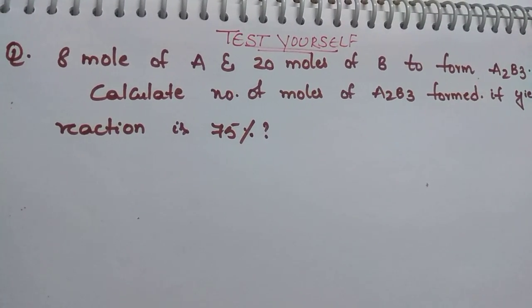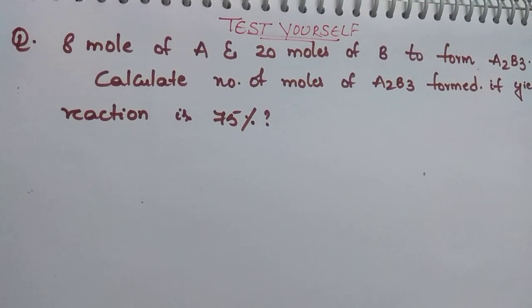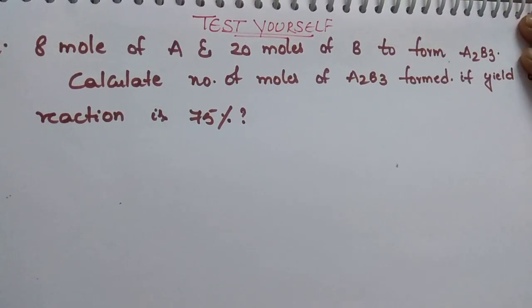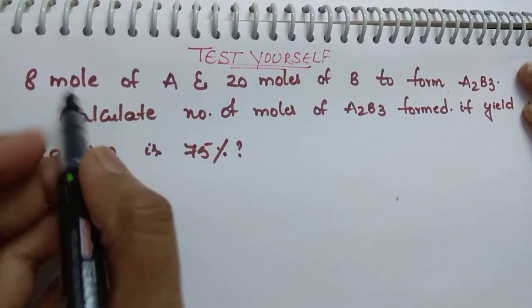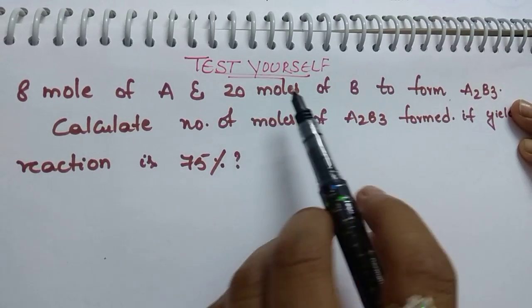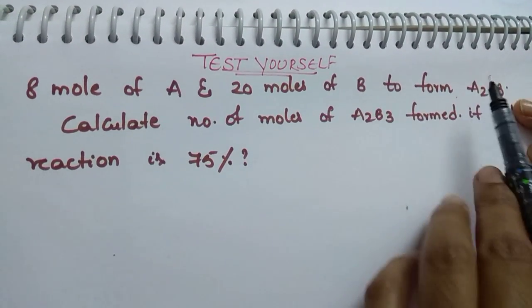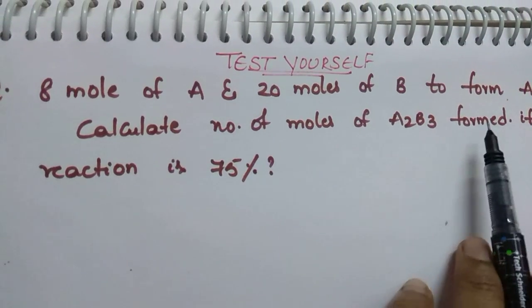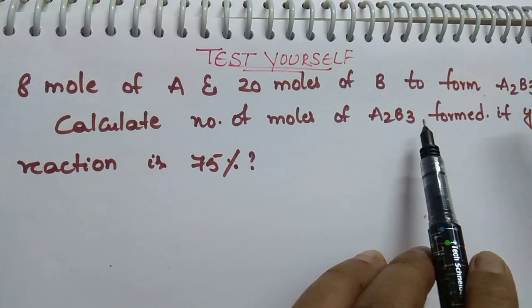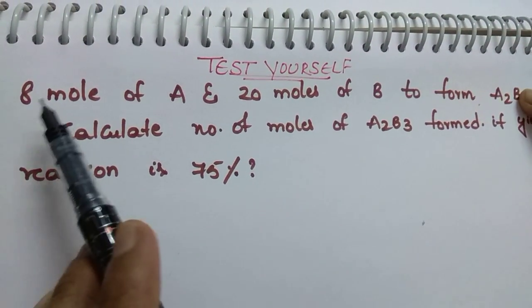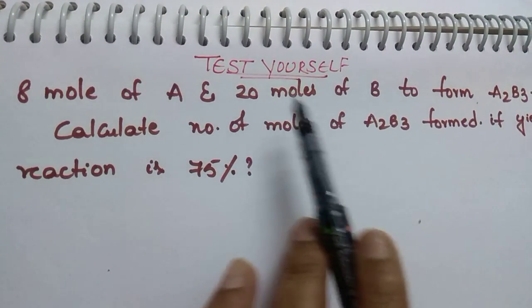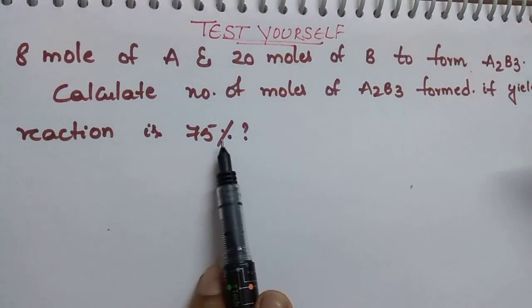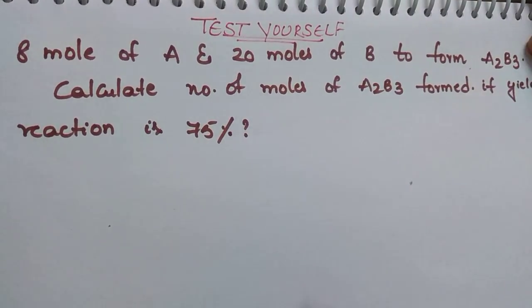Students, in this video I'm going to answer the test yourself question based upon percent yield. Here, 8 moles of A is reacting with 20 moles of B to form A2B3. We have to calculate how many moles of A2B3 is forming when the percentage yield is 75%.